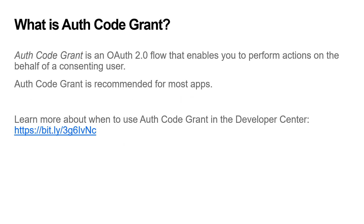AuthCodeGrant is the recommended OAuth flow for most apps. Some of the main advantages of this grant are that it is easier to implement than JWT. The access token you receive from AuthCodeGrant has a lifetime of eight hours rather than one from JWT, and you also receive a refresh token that makes it easy to renew your access token when it is close to expiration. If you're looking for more context on when to use the AuthCodeGrant or other supported grant types, you can read more about them in the Developer Center platform documentation linked in the resources at the end of this screencast.